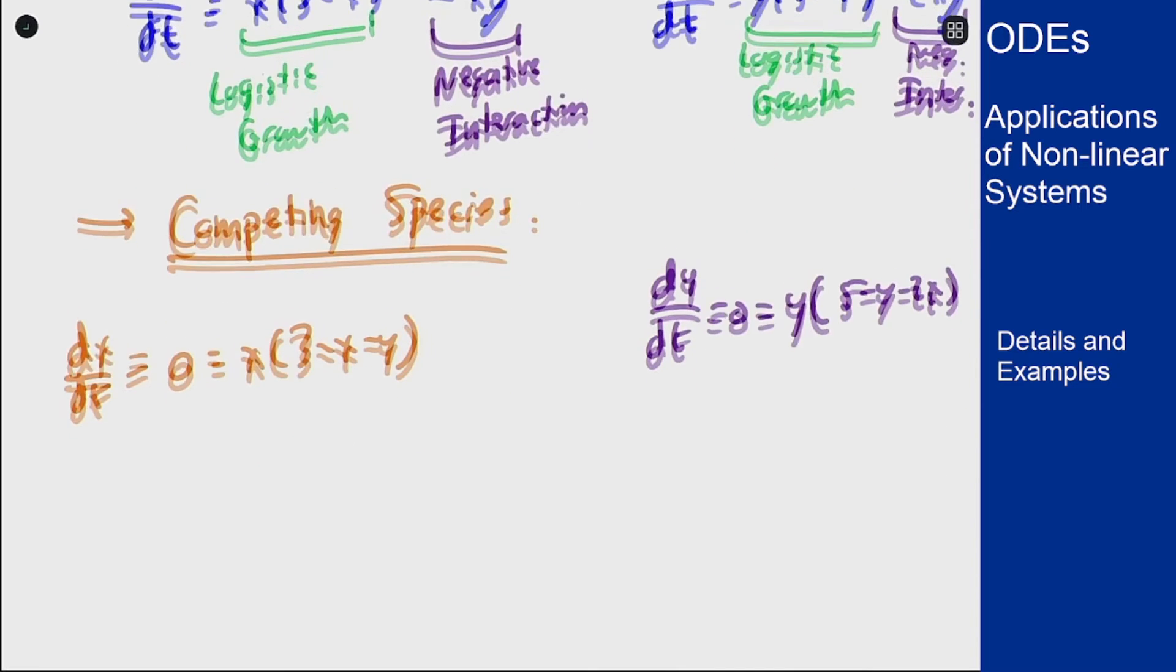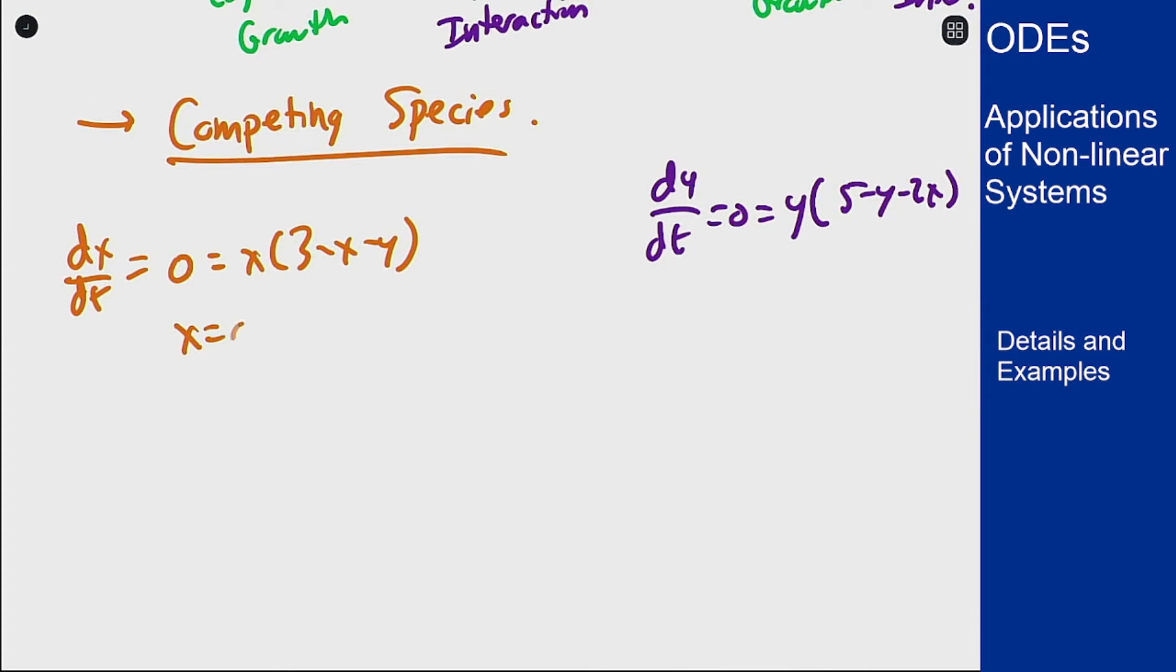For dx/dt this is 0 when x equals 0 or 3 minus x minus y equals 0. For dy/dt it's 0 when y equals 0 or when 5 minus y minus 2x equals 0. We want these both to be true to get equilibrium solutions. We'll use these equations for our null clines later on.